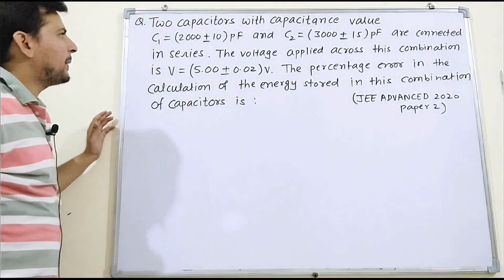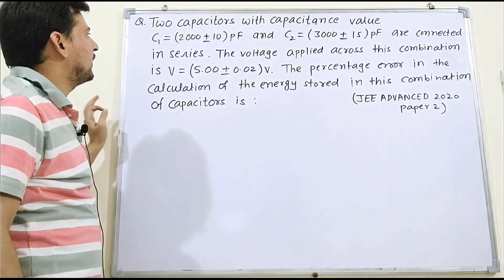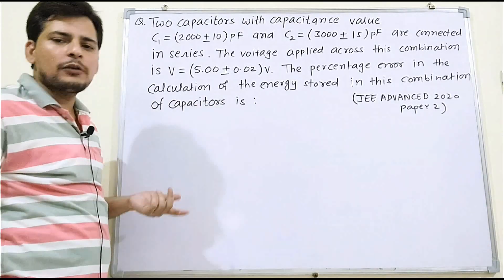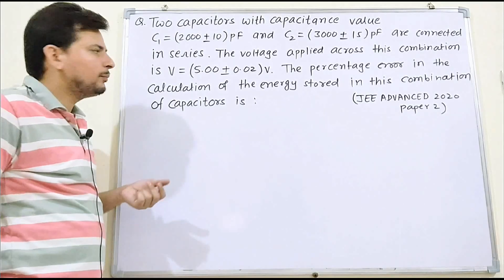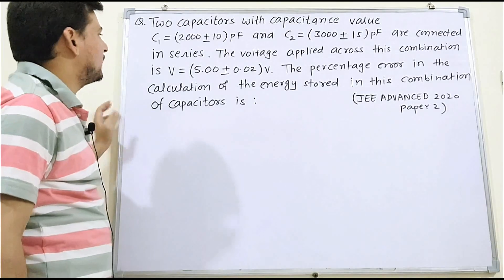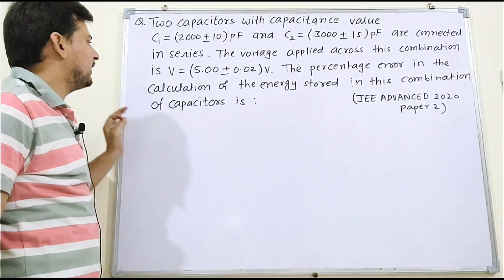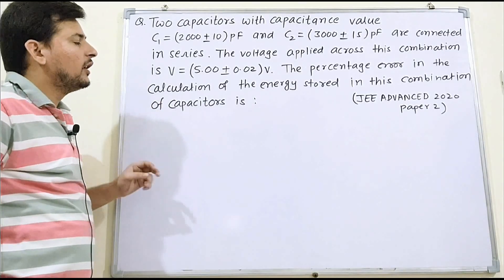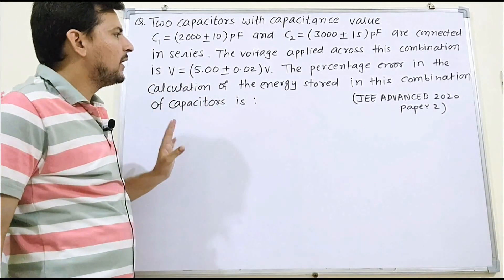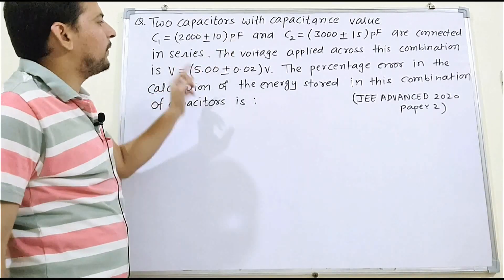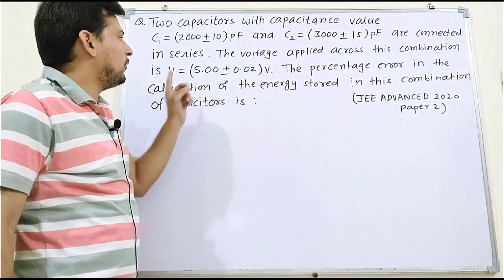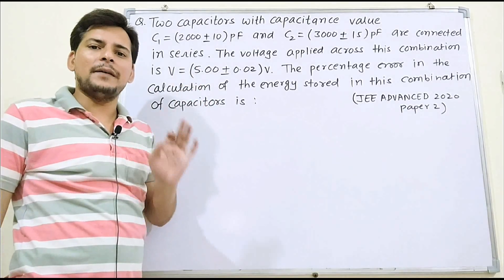The question is: two capacitors with capacitance C1 and C2 are connected in series. The voltage applied across this combination is given, and we need to find the percentage error in the calculation of energy stored — that is, δE/E × 100%. Since C and V are given, we use the basic energy formula: E = half CV squared.